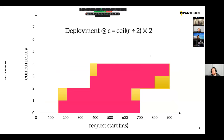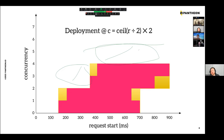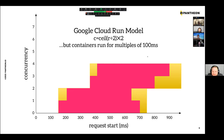This is closer to the model we're looking at — containers that can handle two requests at a time, spun up only on demand. We have a bit of extra capacity whenever a container is deployed before it fills up with requests, but we don't have all that extra capacity sitting unused like in the pre-provisioned model. What you're seeing here is a substantial amount of savings versus having to pre-provision containers because of cold start times.